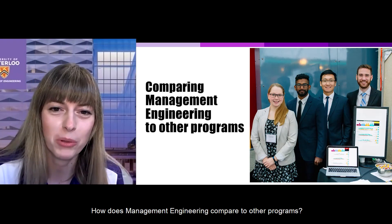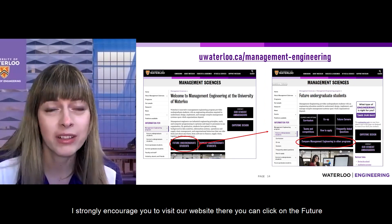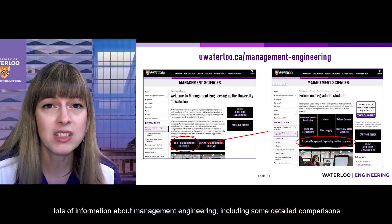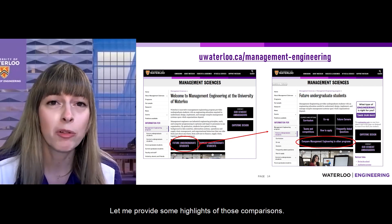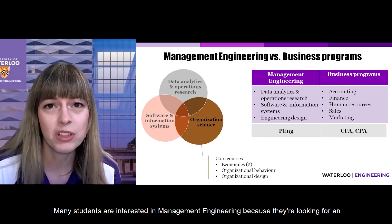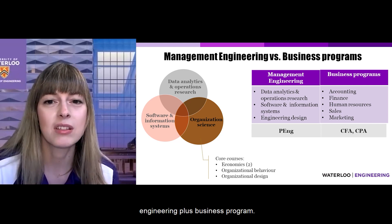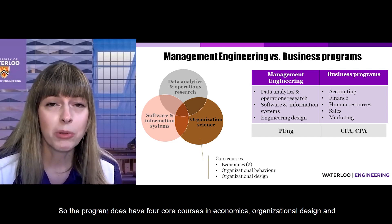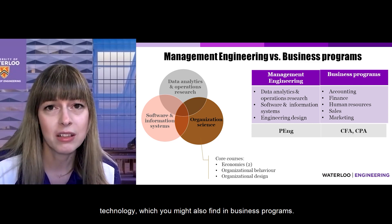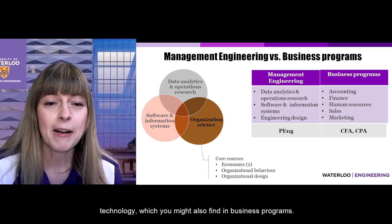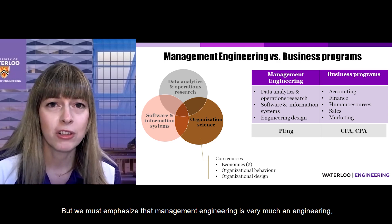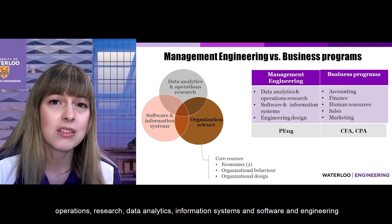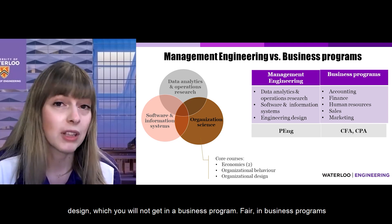How does management engineering compare to other programs? I strongly encourage you to visit our website, where you can find detailed comparisons between management engineering and other programs. Many students are interested because they're looking for an engineering-plus-business type of program. Indeed, the program emphasizes understanding people and organizations and has four core courses in economics, organizational design, and technology, which you might also find in business programs. But management engineering is very much an accredited engineering program, providing advanced in-depth training in operations research, data analytics, information systems, software, and engineering design — which you will not get in a business program.